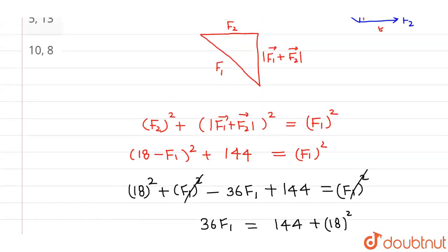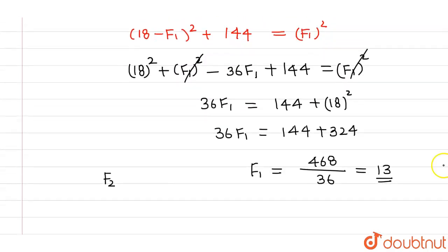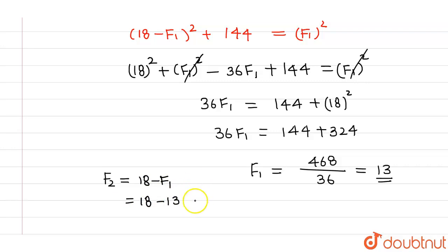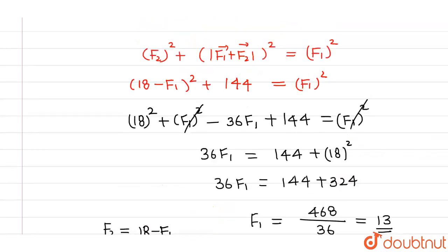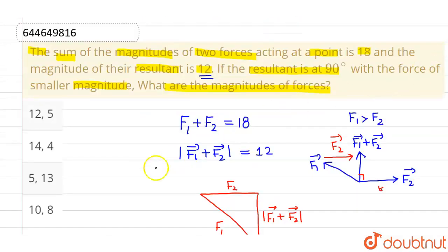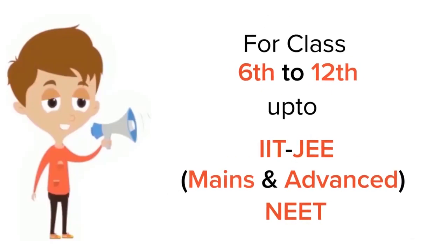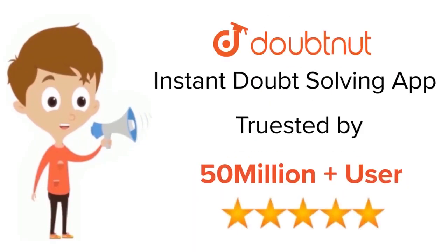Since F1 plus F2 equals 18 and F1 equals 13, F2 equals 18 minus 13, which is 5. So F1 is 13 and F2 is 5. The answer is 5 and 13, which is option C. All other options are incorrect. I hope you understood. For class 6 to 12, IIT JEE, and NEET level, trusted by more than 5 crore students — download Doubtnut today.